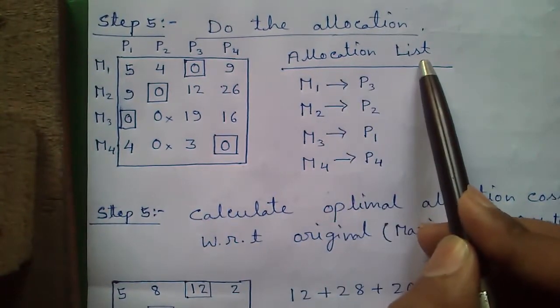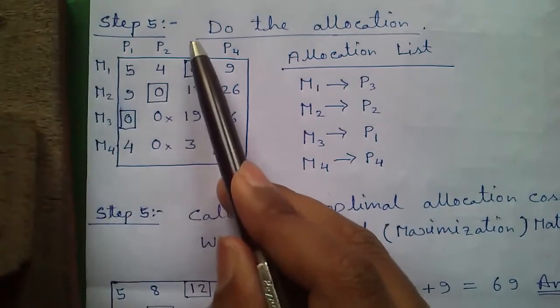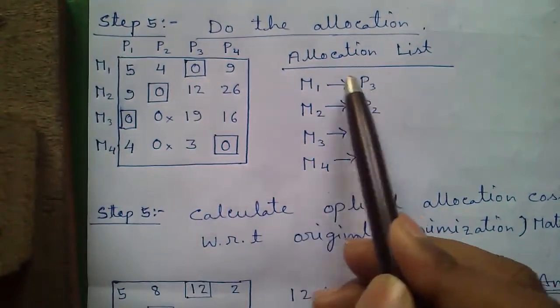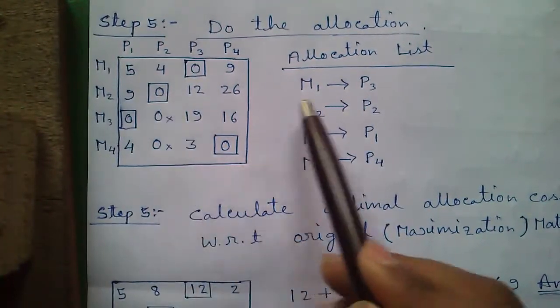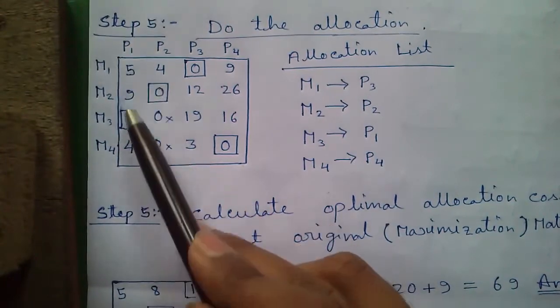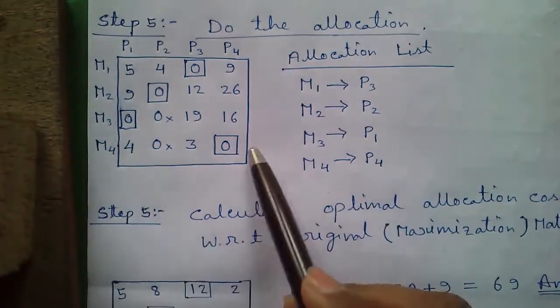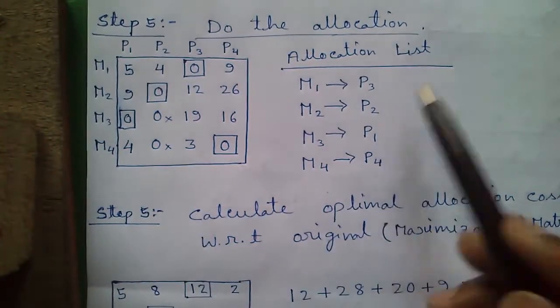Make the allocation list. Allocation list means machine 1 is assigned to person 3, machine 2 is assigned to person 2, machine 3 assigned to person 1, and machine 4 assigned to person 4. This is the assignment list.